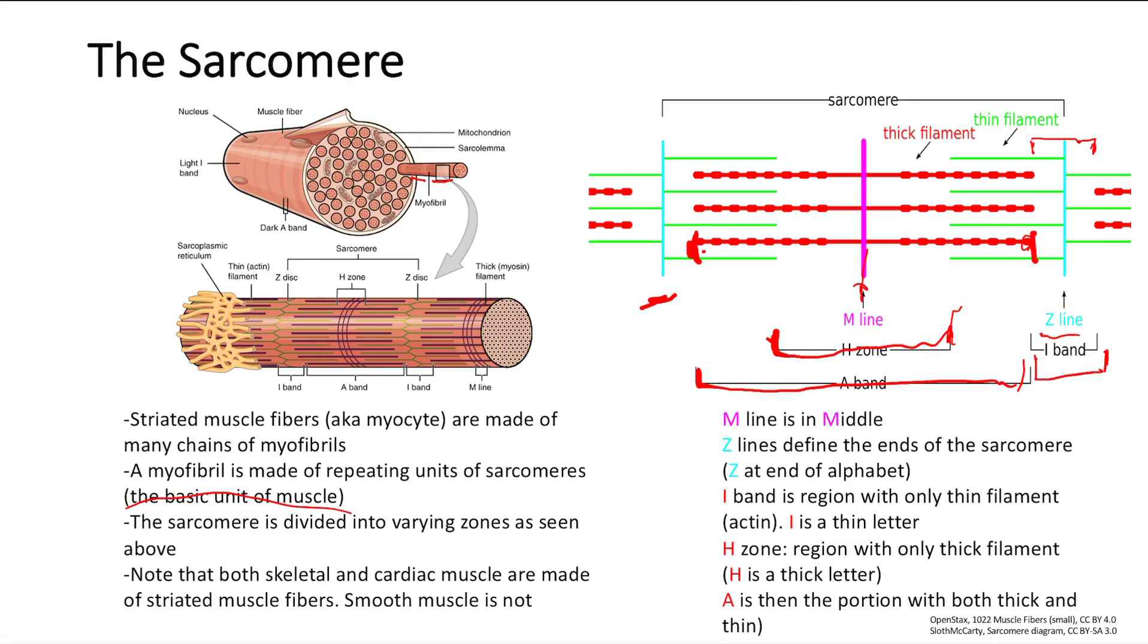Remember M is down the middle, so M is in the middle. Z is the ends of the alphabet, so bookends of the sarcomere. I is thin, so it's just the portion with only the thin filament. And H is thick, so it's the portion with only the thick filament. And A band is the portion with both thick and thin. So that is it for our review of the sarcomere and muscle anatomy.